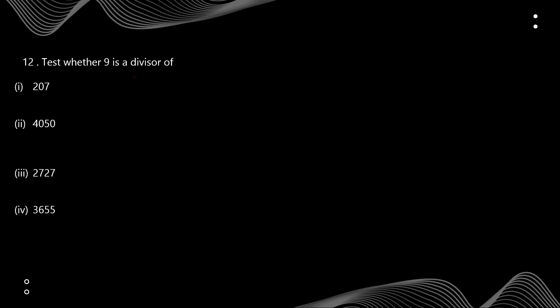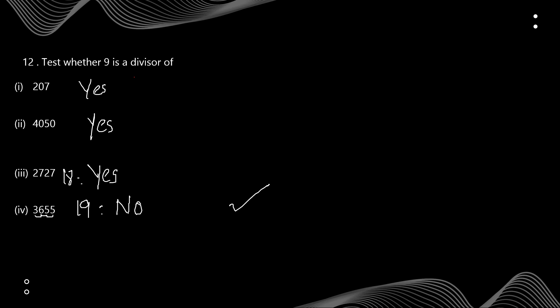Question 12: check whether 9 is a divisor. For 9, you sum all the digits and the sum must be divisible by 9. First number: 7+0+2=9, divisible by 9, so yes. Second number: 4+0+5+0 — ignoring zeros, 4+5=9, divisible by 9, so yes. Third number: digit sum is 2+7+...= 18, divisible by 9, so yes. Fourth number: digit sum is 19, which is not divisible by 9, so no — it's not a divisor of 9.